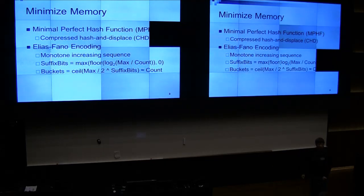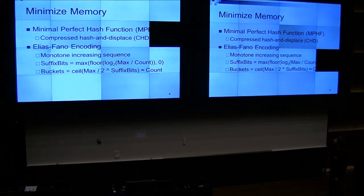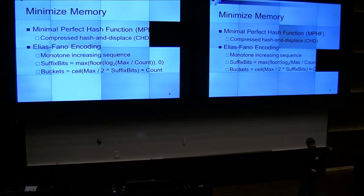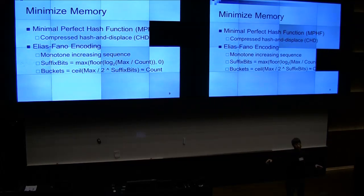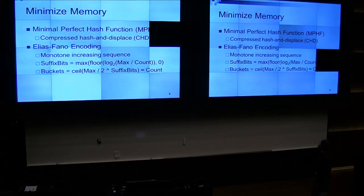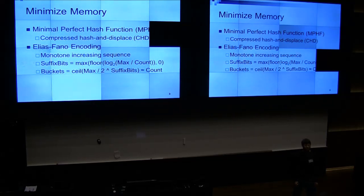First, we're going to be minimizing memory usage. There are two algorithms. Minimal perfect hash functions — basically this is a hash table data structure where 'perfect' means there are no collisions. You're given all the data up front, then you have to generate a hash function that maps into the hash table without any collisions. 'Minimal' means there are no empty slots. The correct best algorithm is Compressed Hash and Displace, invented in 2009.